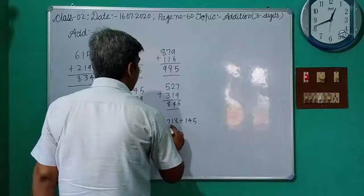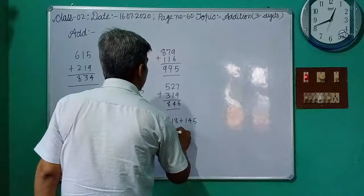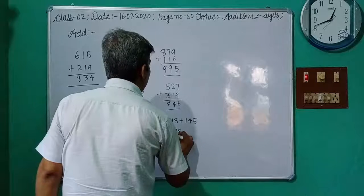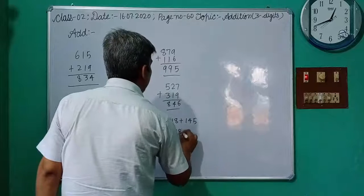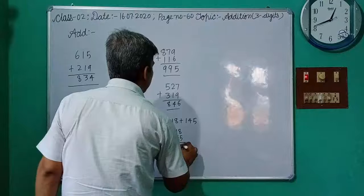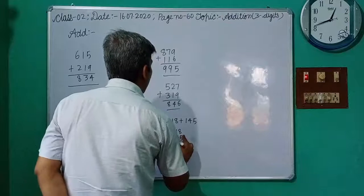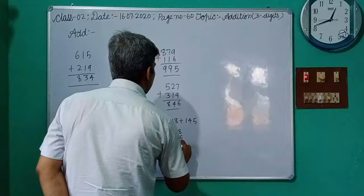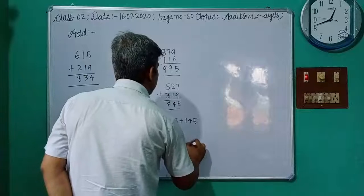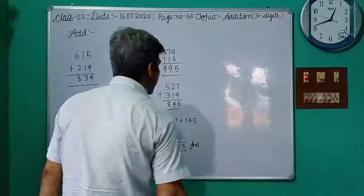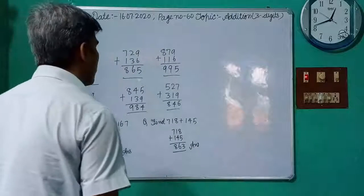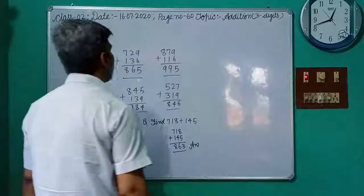And now last question: Write in the form of addition. 718 plus 145. 8 plus 5 is 13. 3. 4 plus 1 is 5, 1 is 6. 7 plus 1 is 8. This is the answer: 718 plus 145 is 863.